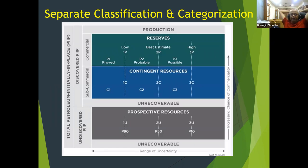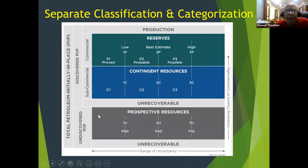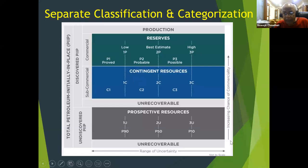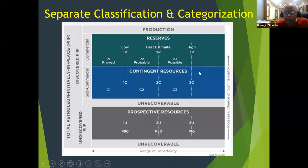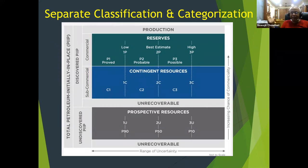In the SPE PRMS diagram, all hydrocarbon resource volumes are subdivided into three broad categories: prospective resources, contingent resources, and reserves. The Y-axis shows increasing chance of commerciality — as you move from prospective resources to contingent resources to reserves, your chance of being commercial increases. The X-axis shows the range of uncertainty in how much volume you will recover.